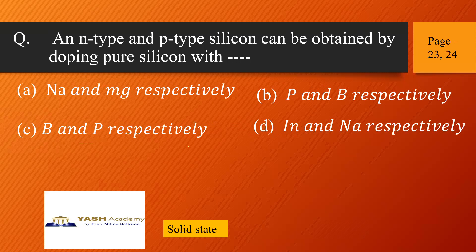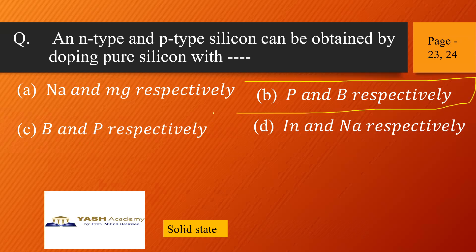Next question from solid state, page 23-24. An N-type and P-type silicon can be obtained by doping pure silicon with — options include Na and Mg, phosphorus and boron, boron and phosphorus, iron and sodium. The correct answer is option B: phosphorus and boron. When phosphorus is added to pure silicon, it has 5 valence electrons so one electron is extra, forming an N-type semiconductor. When boron is added, it has only 3 electrons, creating a hole which acts as positively charged, giving a P-type semiconductor.